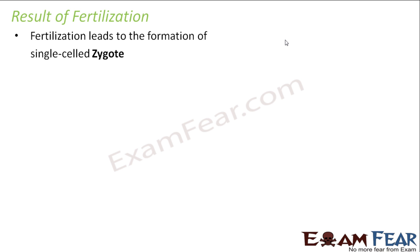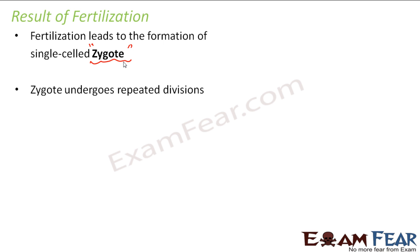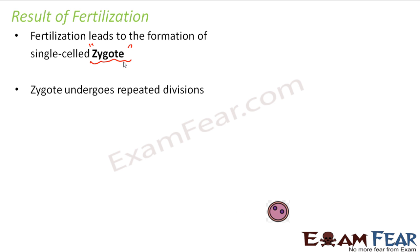What is the result of fertilization? Once the nucleus of the sperm fuses with the nucleus of the ovum, a single-celled zygote is formed. This is the result of fertilization — first a zygote is formed, and then this zygote will undergo repeated divisions.